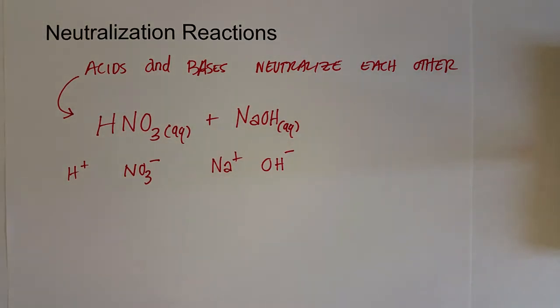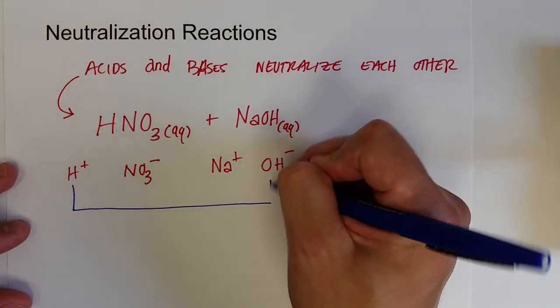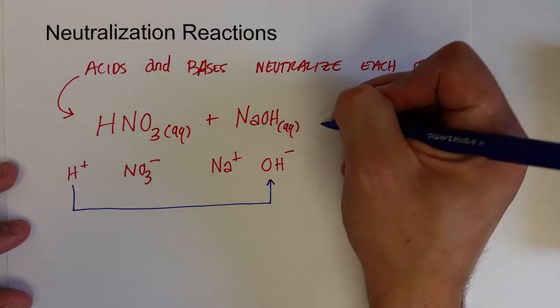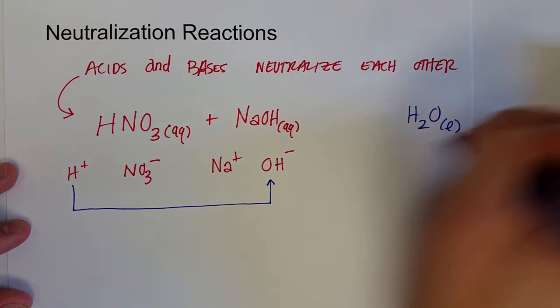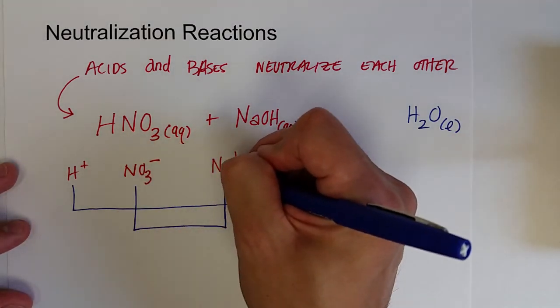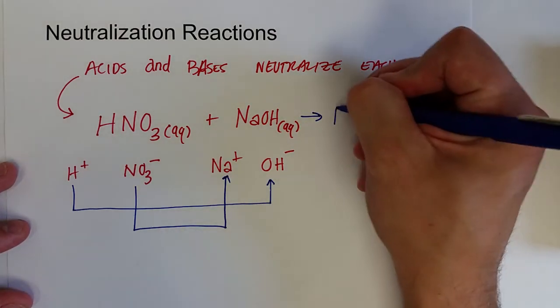So when they are mixed, what happens is that the H plus ions are immediately attracted to the hydroxide ions and they will form water molecules. And of course sodium and nitrate may interact and they may produce a solid compound or they can stay aqueous.